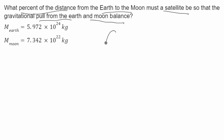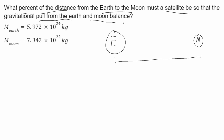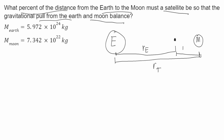I'll start by drawing a picture. This will be the Earth, and this will be the Moon. This will be the total distance between them — I'll call this RT. Now I need to figure out where to draw my satellite. The Earth has much more mass than the Moon, so in order for the gravitational pull to balance, the satellite will have to be closer to the Moon. I'll say the distance from the satellite to the Earth will be RE.